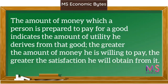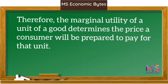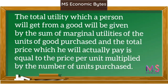The amount of money a person is prepared to pay for a good indicates the amount of utility he derives from that good. The greater the amount of money he is willing to pay, the greater the satisfaction or utility he obtains. Therefore, the marginal utility of a unit of a good determines the price a consumer will be prepared to pay for that unit. The total utility will be given by the sum of marginal utilities of the units purchased.